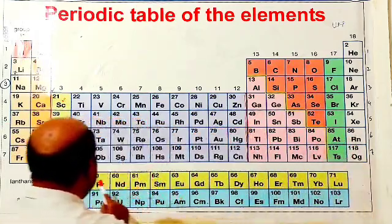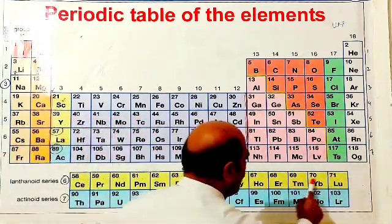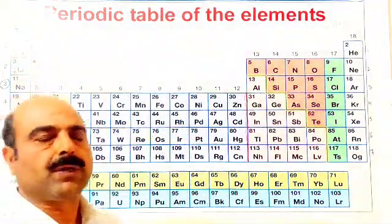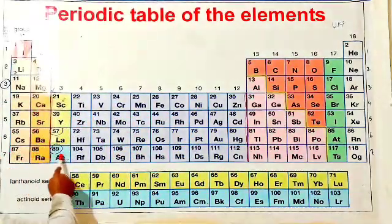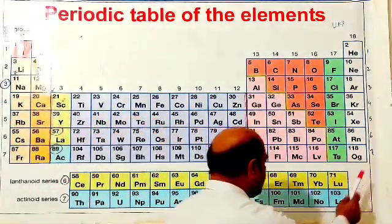Period number 6 these are total 18 elements include these 14 elements also their total becomes 32.